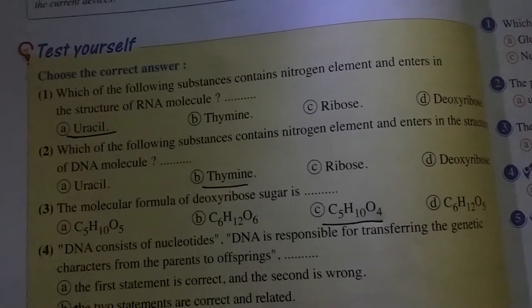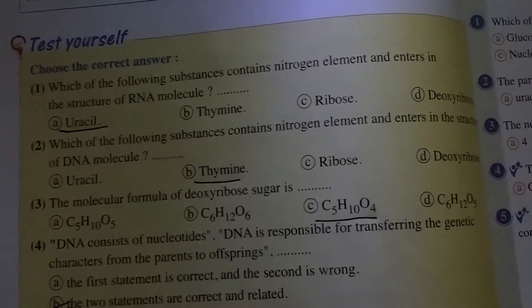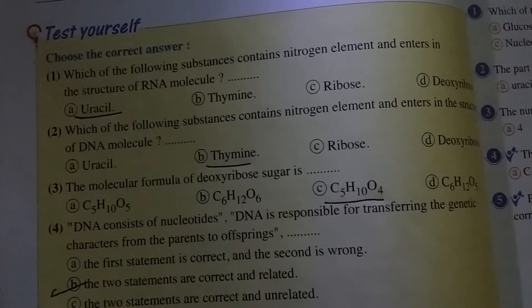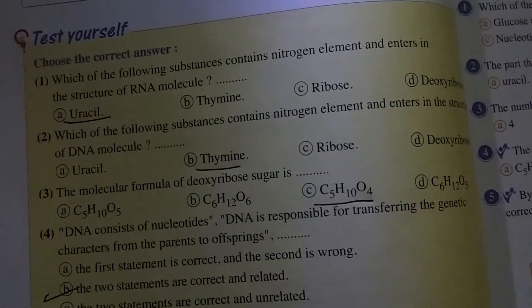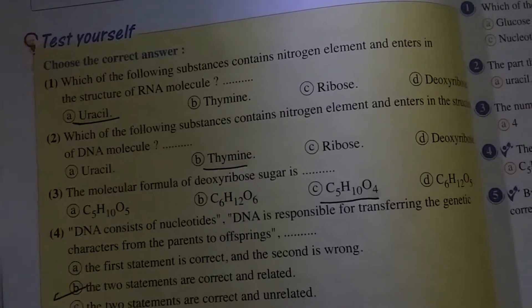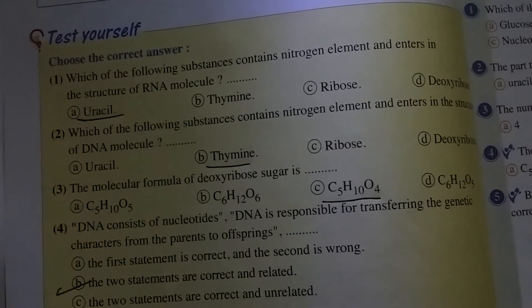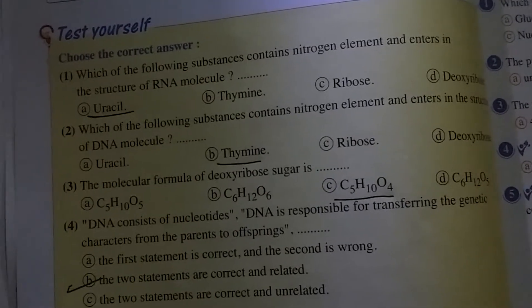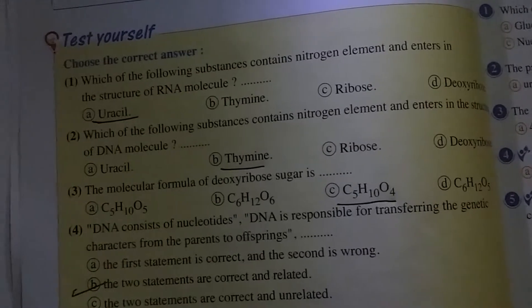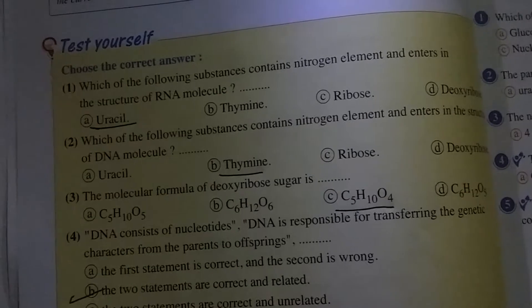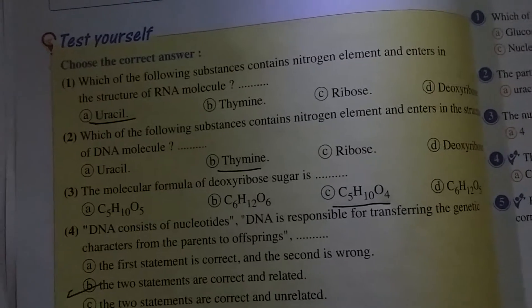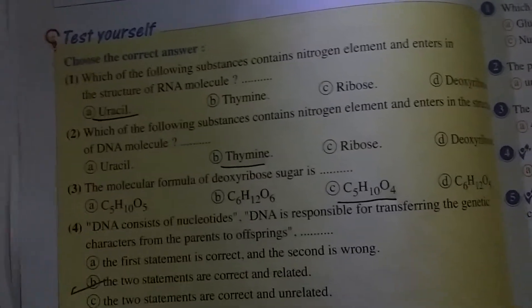Question three: Choose the correct answer. Which of the following substances contains nitrogen element and enters in the structure of an RNA molecule? The choices are: uracil, thymine, ribose, deoxyribose. We know that deoxyribose is a constituent of DNA, and thymine is also a constituent of DNA, so the answer is A — uracil.